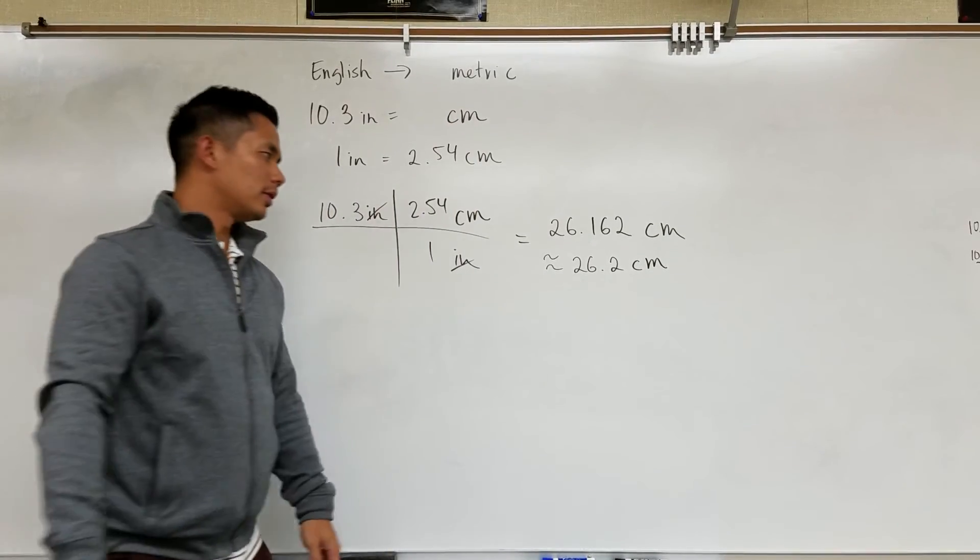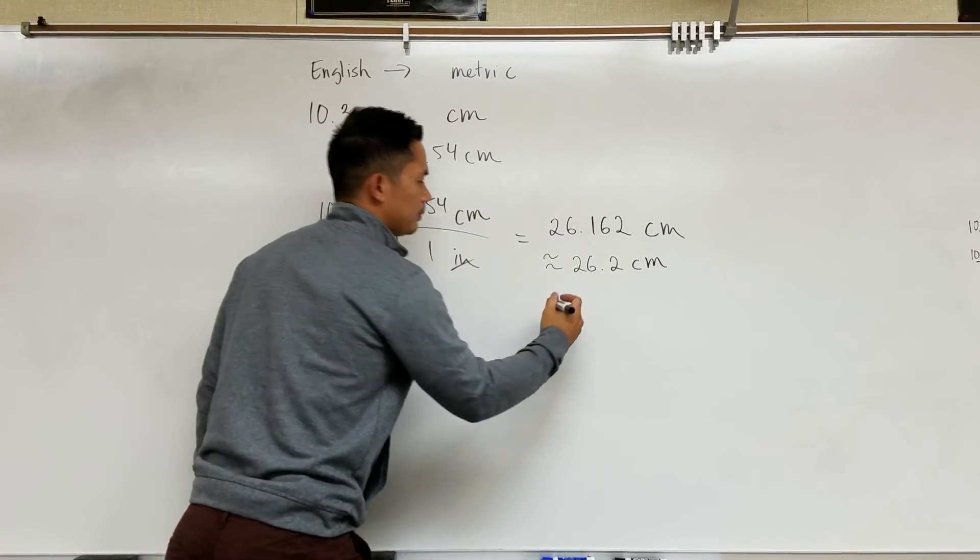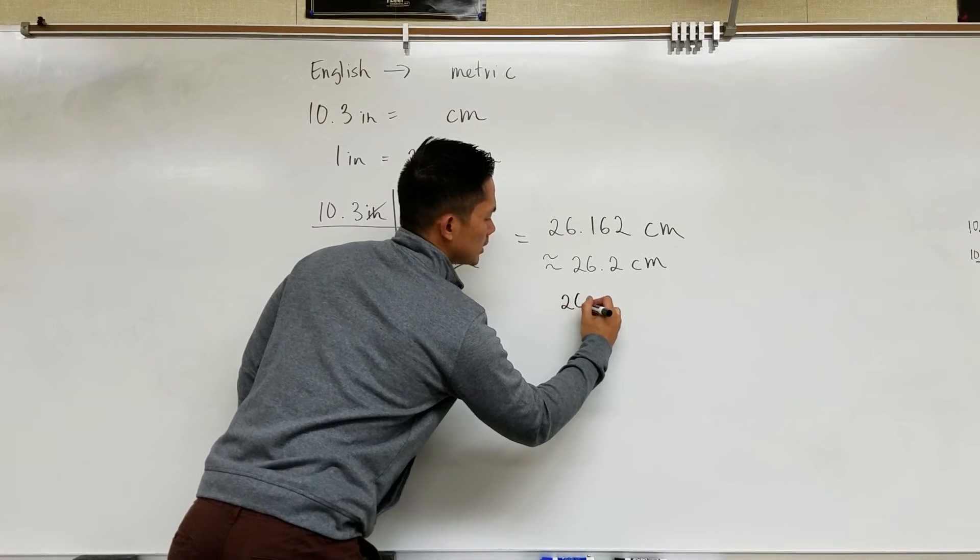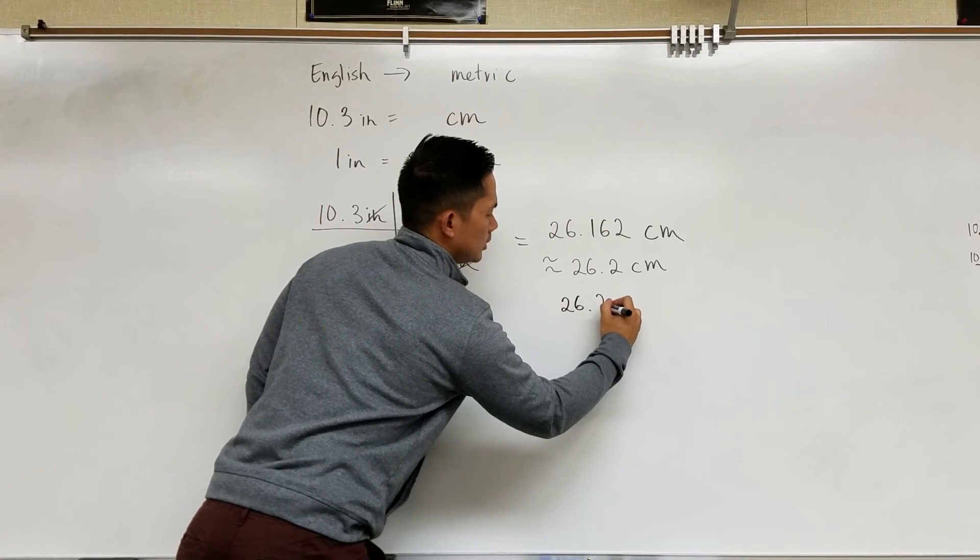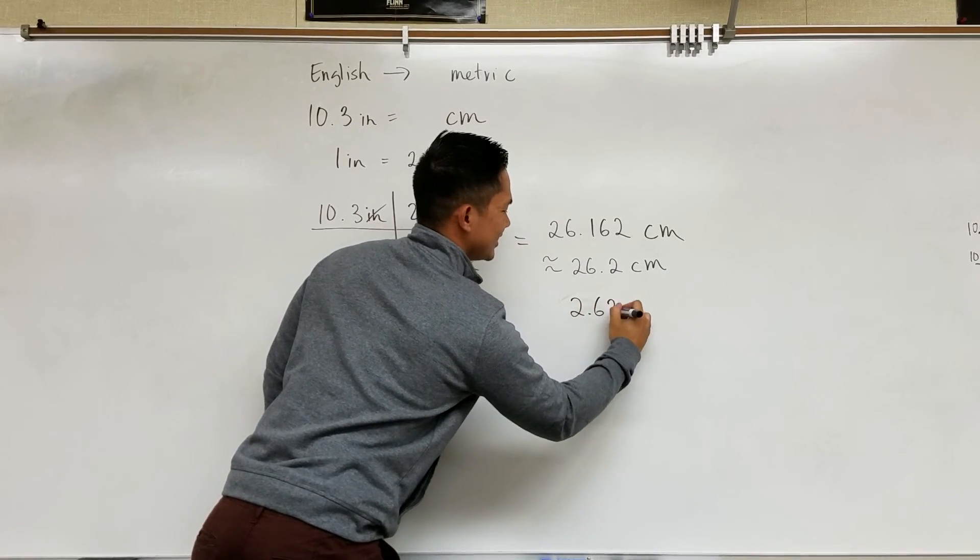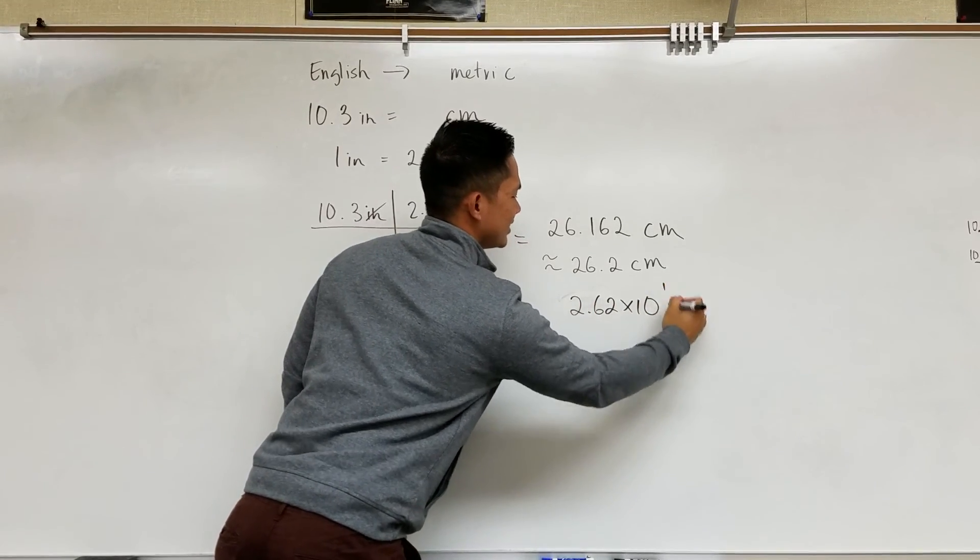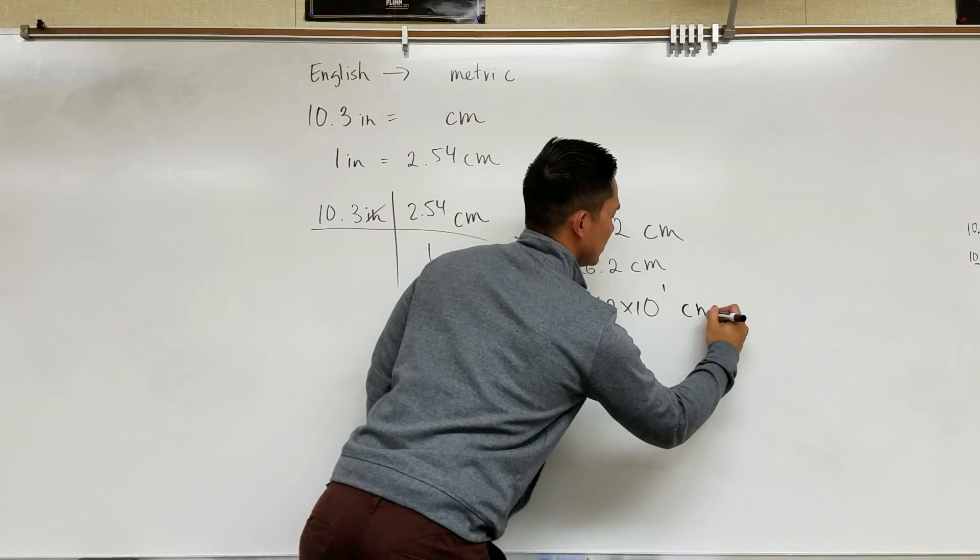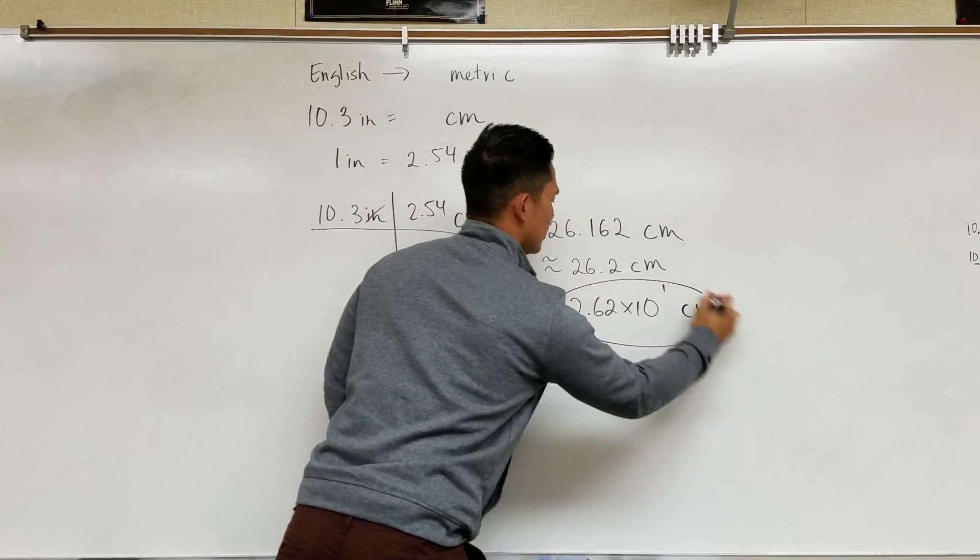If you want to convert this into scientific notation, then this will be 2.62 times 10 to the power of 1 centimeter and circle your answer.